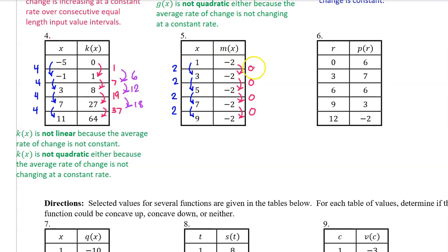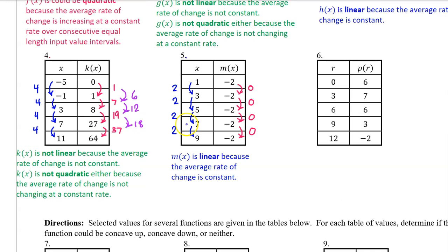For number 5, here are the output value changes and here are the input value changes. Since we do have consecutive equal-length input value intervals, we do not have to actually show the calculation of the average rate of change — we can see that it is constant. We can say that m(x) is linear because the average rate of change is constant.